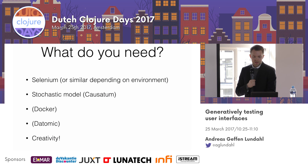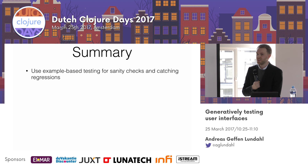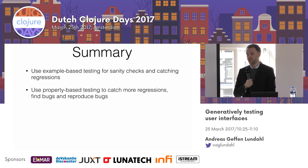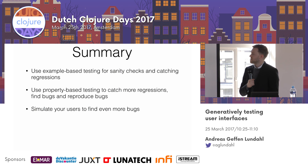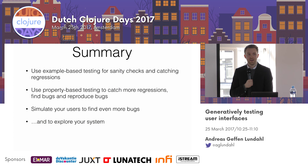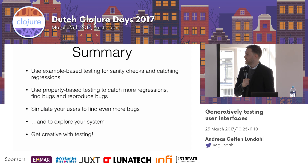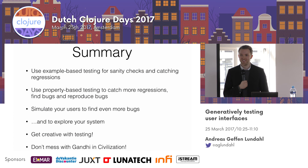To sum things up: use example-based testing for sanity checks and catching regressions. Use property-based testing to catch even more regressions and find new bugs. And simulate your users to find even more bugs and, more importantly, to explore and analyze your system. Get creative with testing — you will win a lot from this. And don't mess with Gandhi when you play Civilization. Thank you so much.